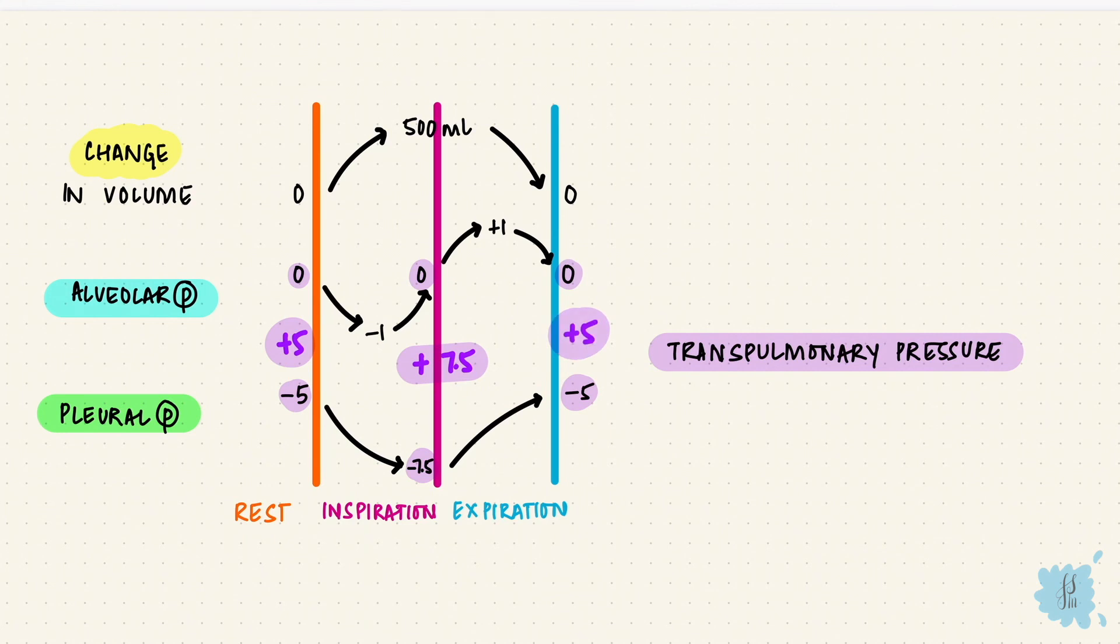As long as the transpulmonary pressure remains positive, the airways stay open. When the transpulmonary pressure becomes negative, airways collapse.